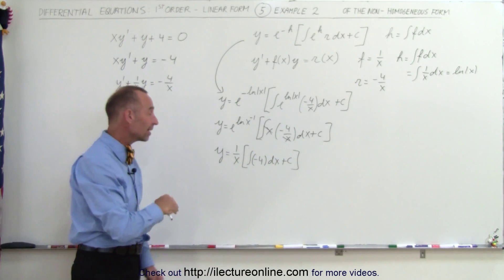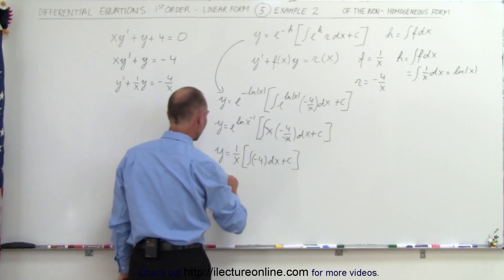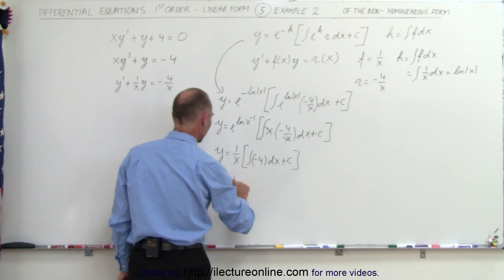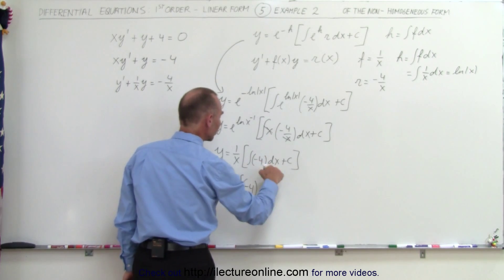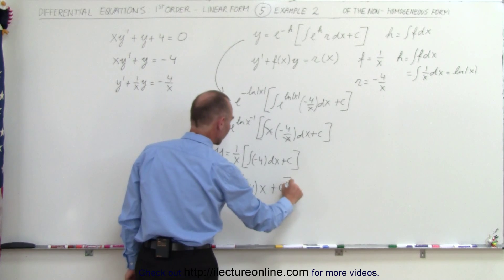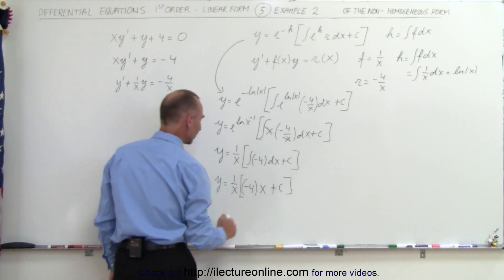Of course, minus 4 comes outside the integral sign, and so the integral of dx is simply x, so we have y is equal to 1 over x, times minus 4, times the integral of dx, which is x, plus a constant of integration, and finally we multiply this through, we get y is equal to minus 4 plus c over x.